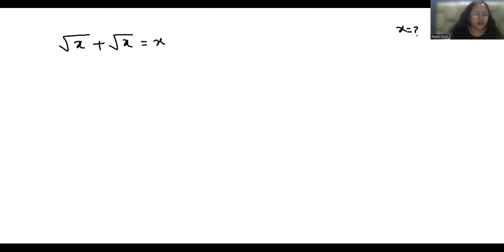So let's start with today's video solution. √x + √x I can write as 2√x = x. Now if I divide both sides by 2, √x = x/2.